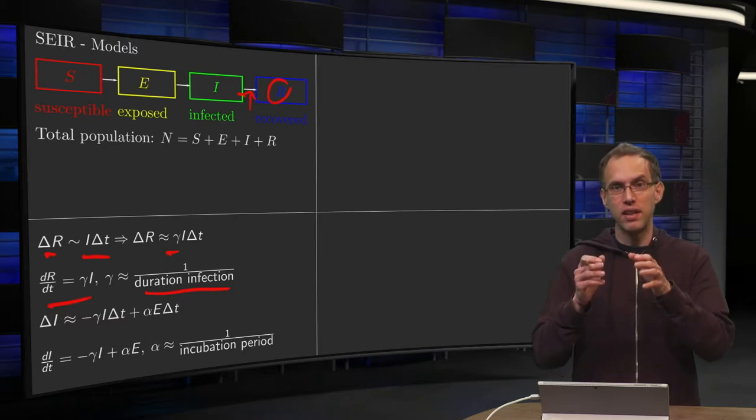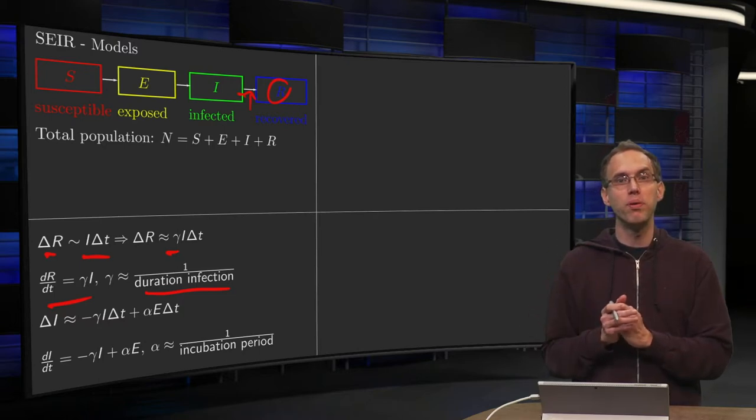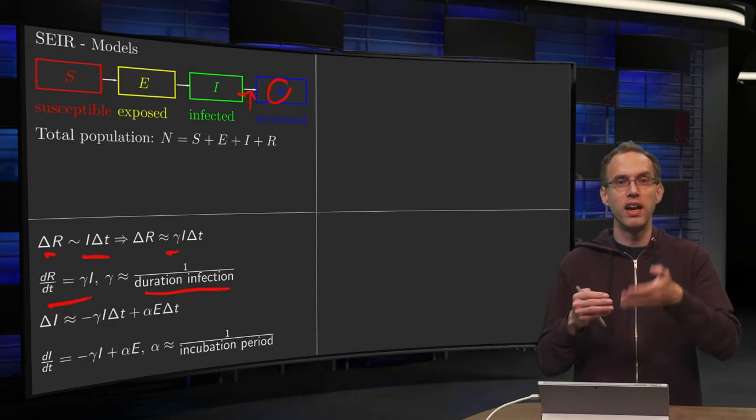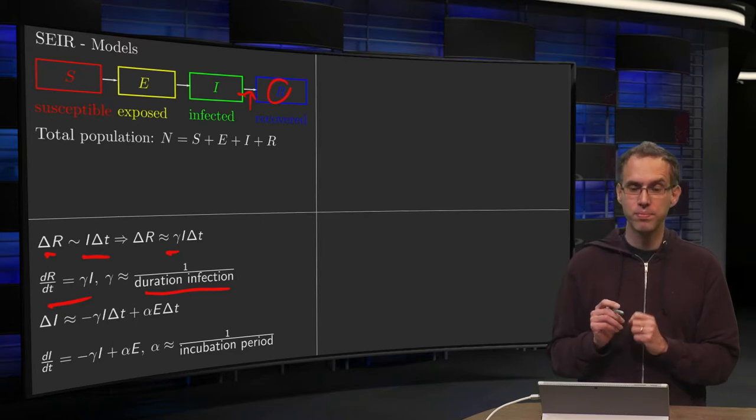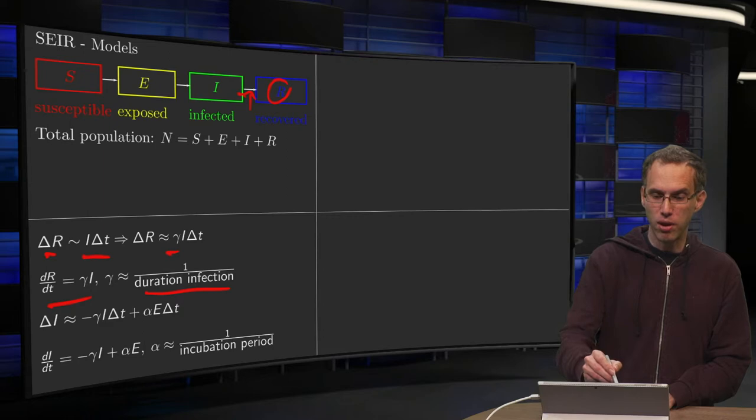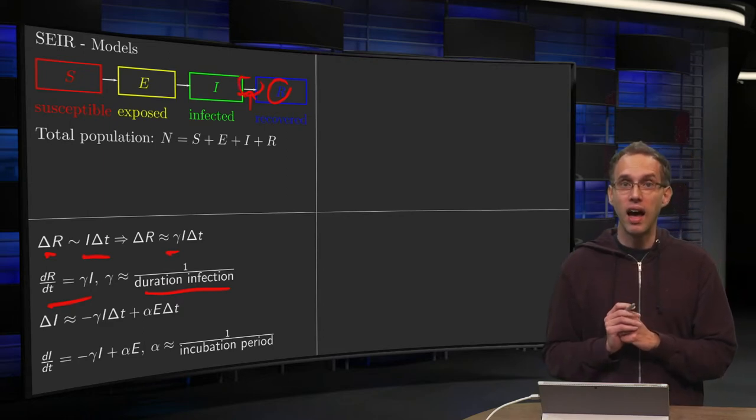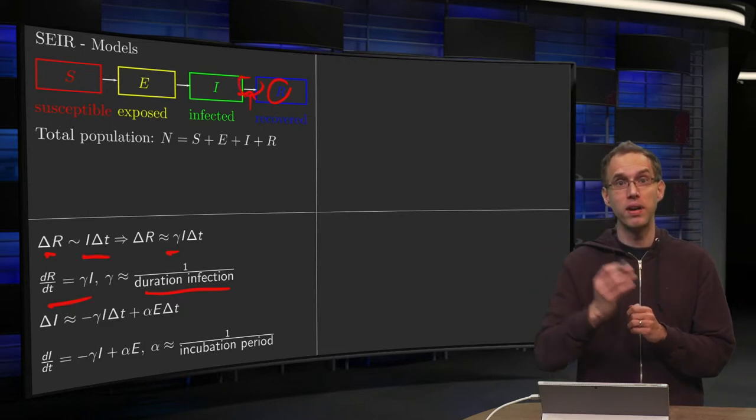So your gamma is basically 1 over the duration of your infection. So if you have like 100 people and the duration is 7 days, on average per day 100 over 7 people will recover. So your gamma will be 1 over 7 then. So that's that arrow going from I to R. That's how you can end up in R.